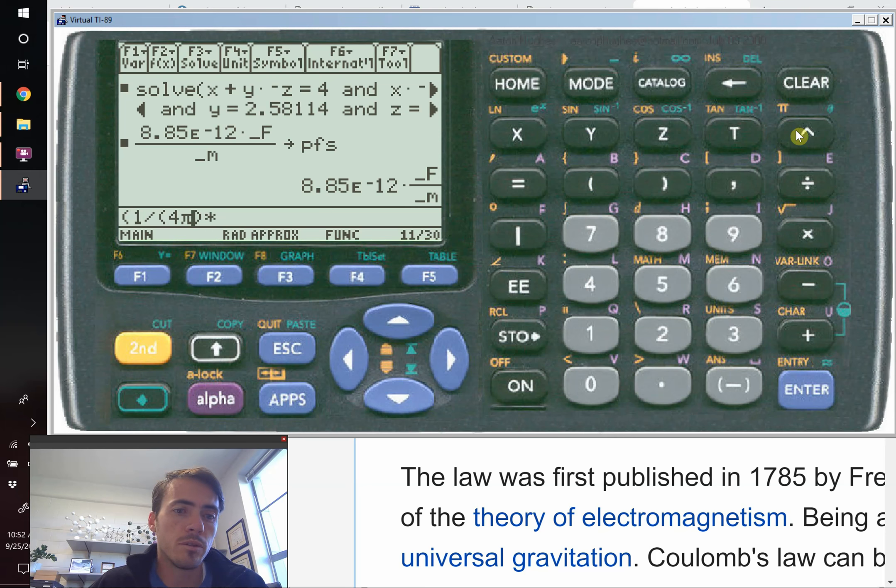Multiplied by the permittivity of free space, so we're going to go P, F, S. I'm going to add a multiply in between there. I think it'll work without it, but I'm going to add it just in case. So that's 1 over 4π times PFS. That's our constant in front.